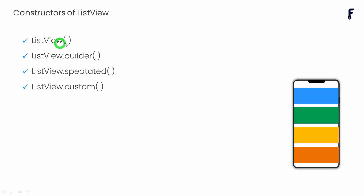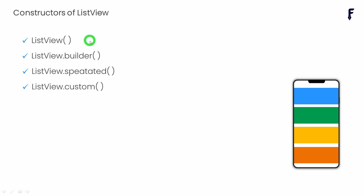The four constructors are: the simple ListView, ListView.builder, ListView.separated, and ListView.custom. In this specific video, I will focus only on the constructor called ListView. In our upcoming videos, one by one, I will talk about the remaining constructors.